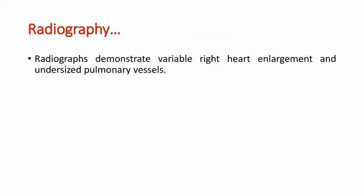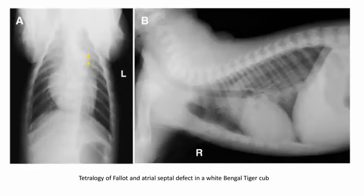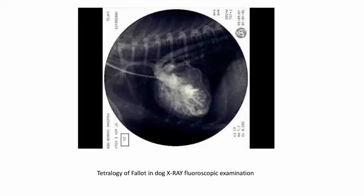Radiography: radiographs demonstrate variable right heart enlargement and undersized pulmonary vessels. In humans, the heart with Tetralogy of Fallot can be seen in the shape of a boot on x-ray. Here you can see the shape of the heart — this is Tetralogy of Fallot and atrial septal defect in a white Bengal tiger cub. And this is the picture of Tetralogy of Fallot in a dog on x-ray fluoroscopic examination.